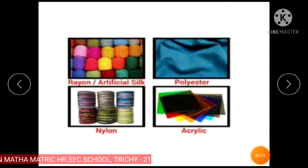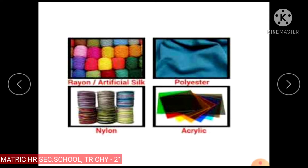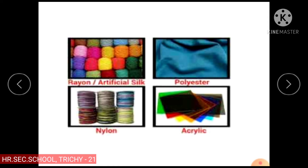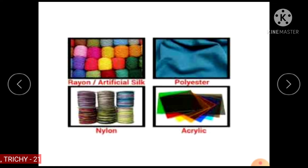The discovery of making synthetic fibers out of petrochemicals has replaced the use of many natural fibers. Synthetic fibers such as nylon, polyester and acrylic are used to make many different plastic items we use in our daily life such as clothing, blankets, toothbrushes and stuffing in cushions.